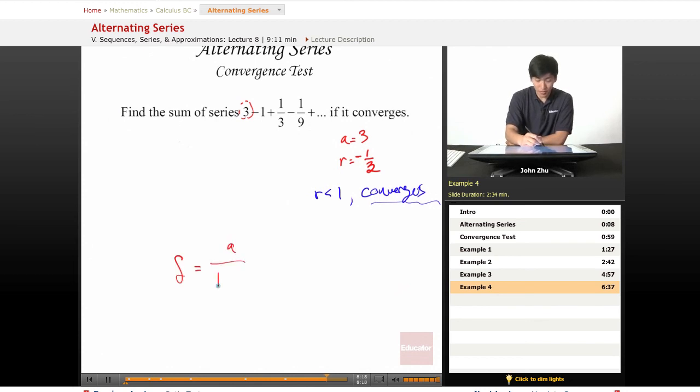The sum formula equals a over 1 minus r. So, a equals 3 over 1 minus negative 1 third. And we do the math here, we get 9 over 4. And 9 over 4 is the sum of the entire series.